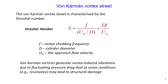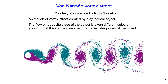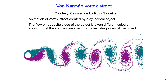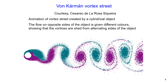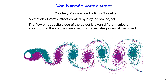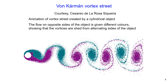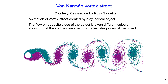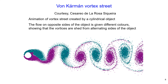Von Kármán vortices generate vortex-induced vibrations due to fluctuating pressure drag that, at certain conditions such as resonance, may lead to structural damage. An animation of the vortex street created by a cylindrical object is shown here. The flow on opposite sides of the object is given by different colors, showing that vortices are shed from alternating sides of the object.